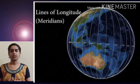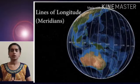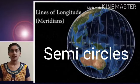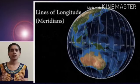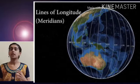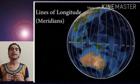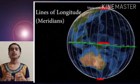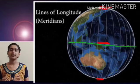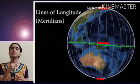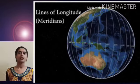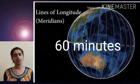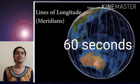So now, longitudes are the vertical lines that are running from north to south. And we have seen that latitudes are circles, but longitudes are semicircles. And comparing both latitudes and longitudes: latitudes never meet each other, whereas longitudes will be meeting at the poles. And the distance between two longitudes will be highest at the equator, and as they move towards the poles, it will be decreasing. Longitudes are also measured in degrees. One degree is further divided into 60 minutes and every minute is divided again into 60 seconds.